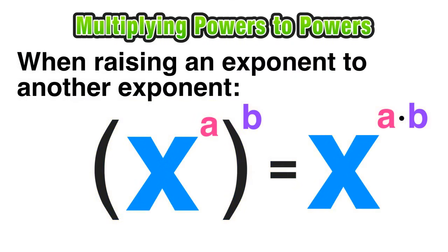So if, for example, we replace those variables a and b with actual numbers, in this case, x to the seventh raised to the third power, using this law of exponents, we would have seven times three as our new exponent, which would equal x to the 21st power, which is our simplified form answer.